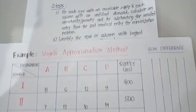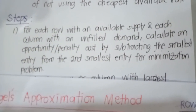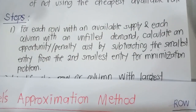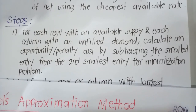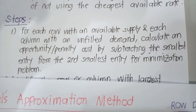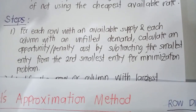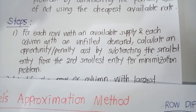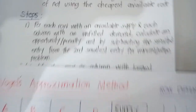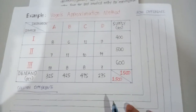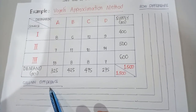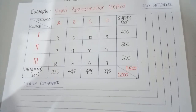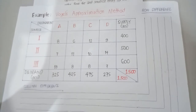For Vogel's Approximation Method, we need to strictly follow different steps. In step number one, for each row with an available supply and each column with an unfilled demand, we calculate an opportunity or penalty cost by subtracting the smallest entry from the second smallest entry for a minimization problem. We have row difference and column difference. We will do the row difference first.